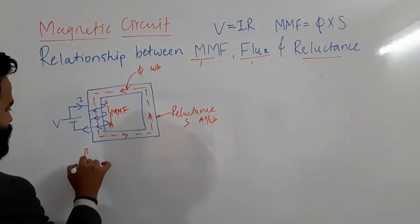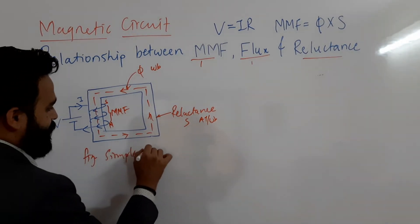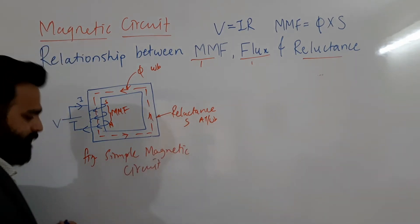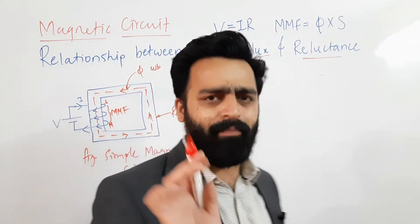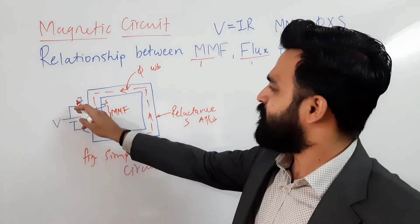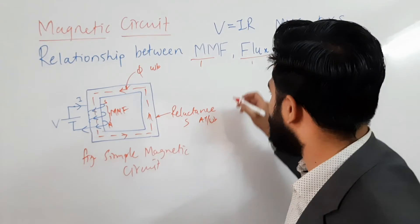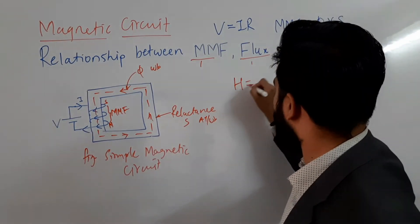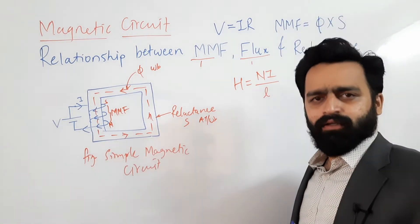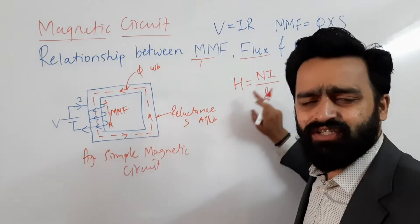This is the circuit diagram for this derivation — a simple magnetic circuit. Now, when you apply the voltage, flux will be produced and hence there will be some magnetic field strength H established in the circuit. This magnetic field strength can be given as H = NI / L.